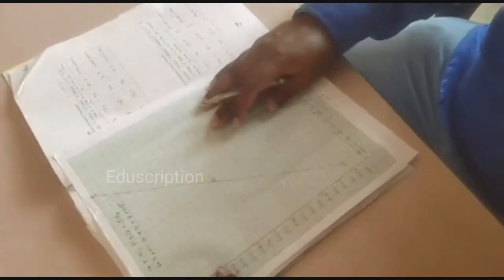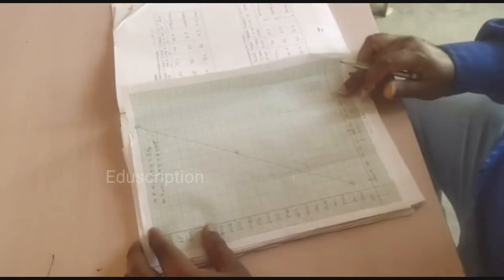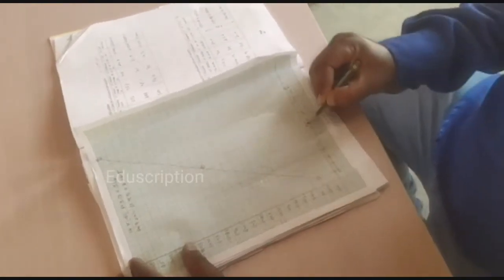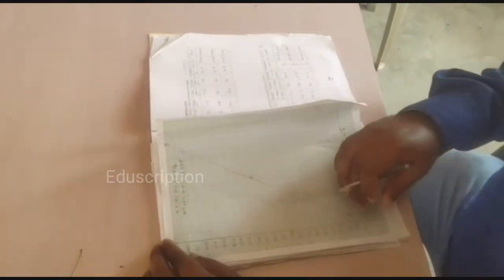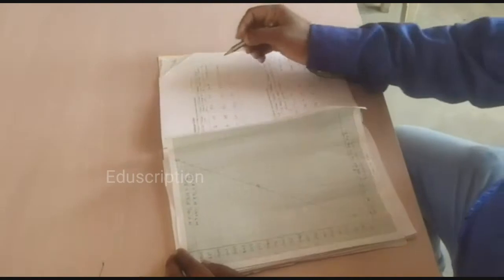See here, this graph is for law of length. For law of length, in x-axis we will take frequency, that is 0, 256, 288, 320. Then in y-axis we will take 1 by L, that is 0.04 to 0.05.